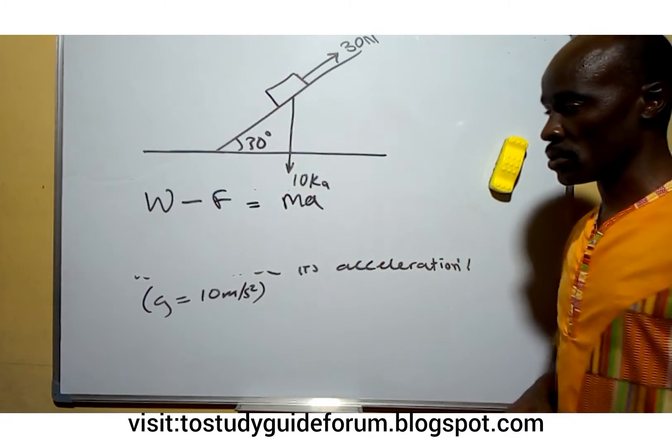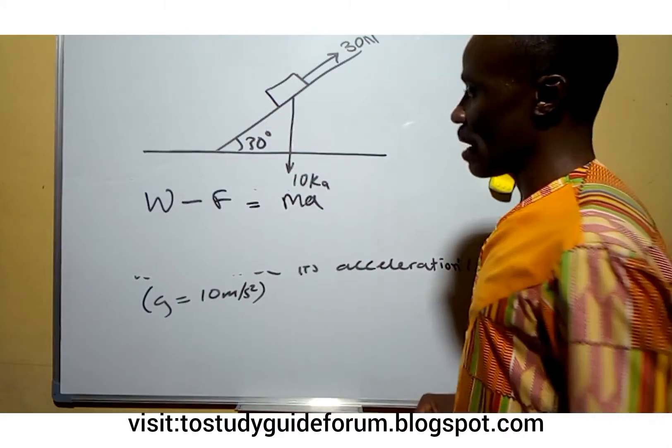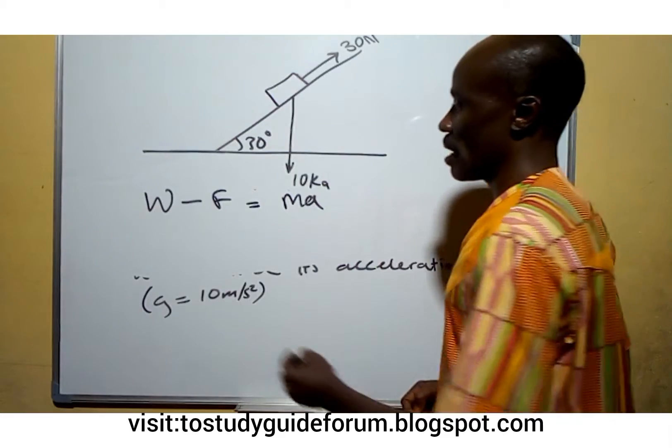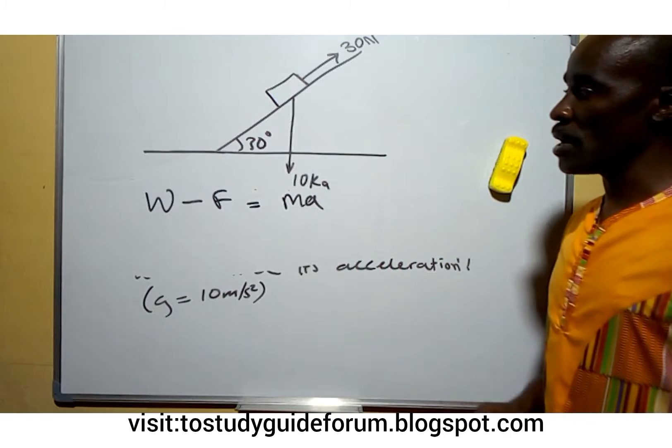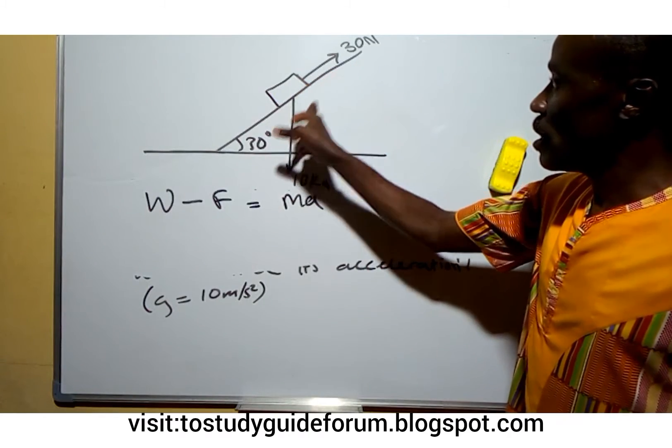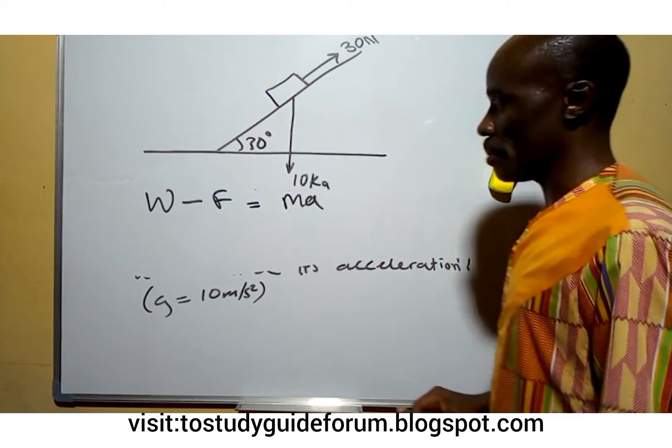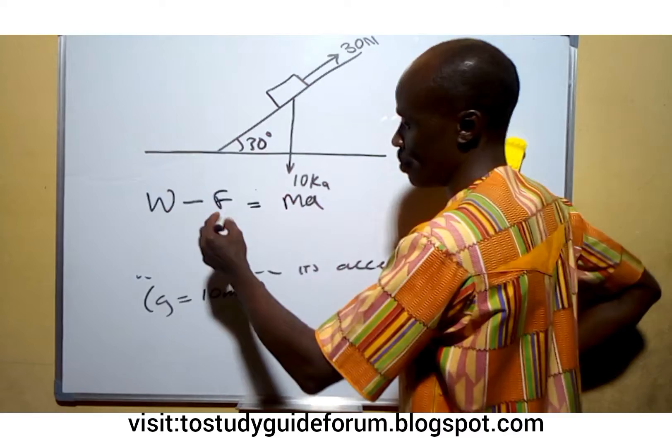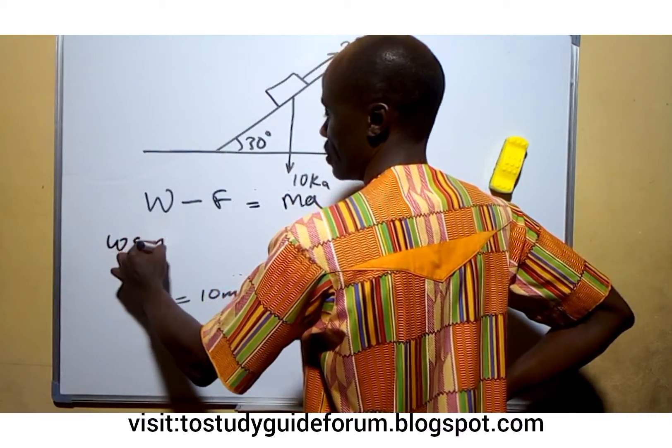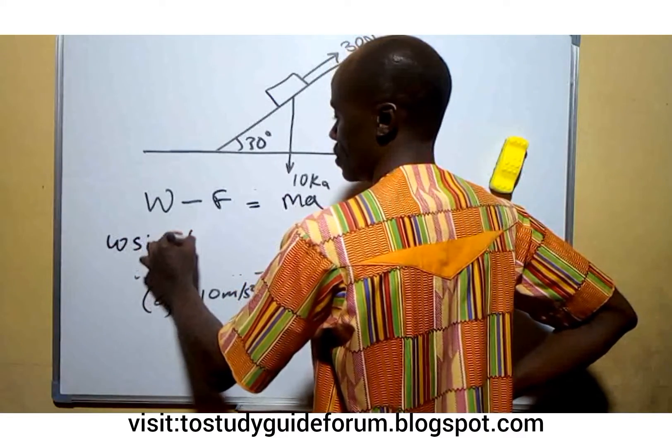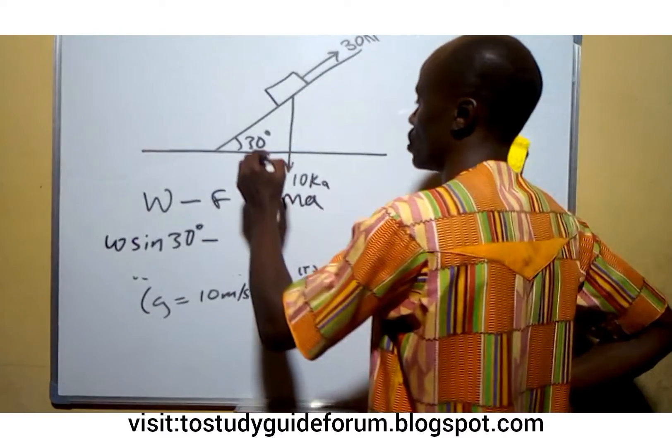Now because we have an inclined plane here, because the effect is on the inclined plane, what we have here should be weight sine 30 degrees minus the frictional force, which is 30 newtons, equals m times a.